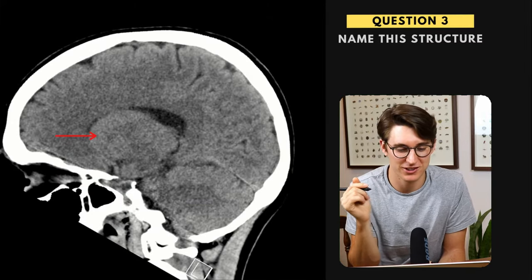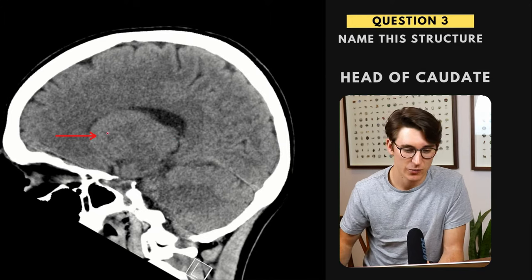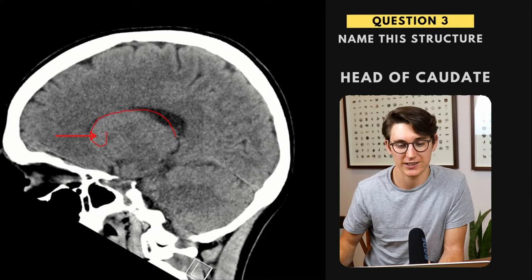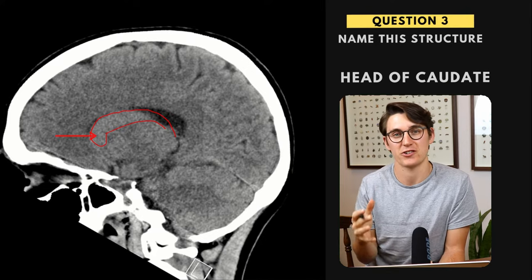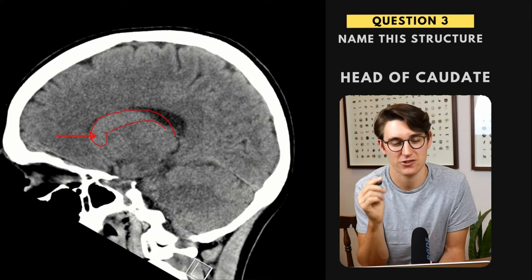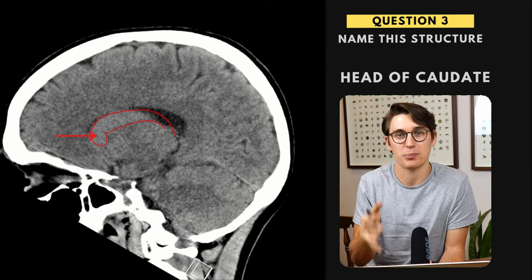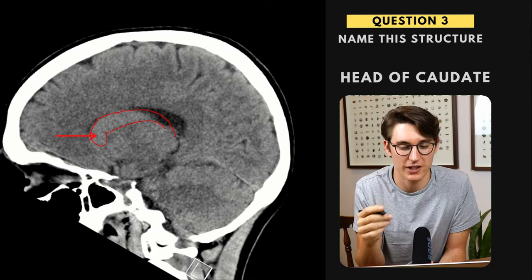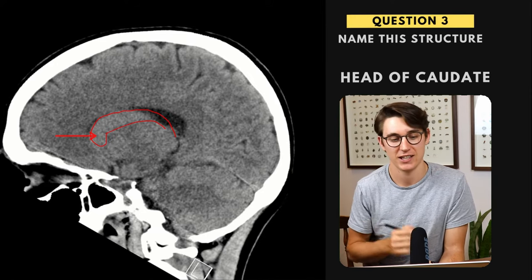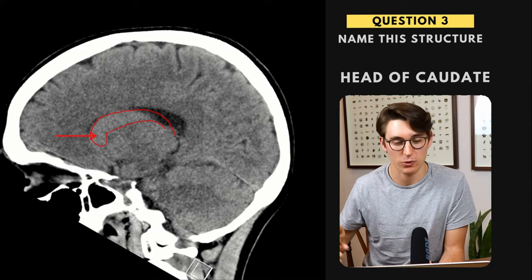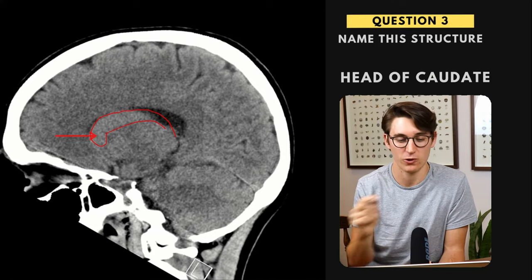Question number three, we're asked to label this structure, and this is the head of the caudate nucleus. The caudate runs from the head to the body and then extending down to the tail, and it runs laterally to the lateral ventricles — the head abuts the lateral surface of the lateral ventricles. This is one part of the corpus striatum. Here in a sagittal slice, we can see the shape of the caudate as it's heading backwards. We're often used to seeing it on axial slices with the internal capsule coming to the lateral portion of the caudate.